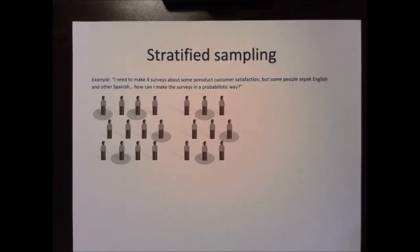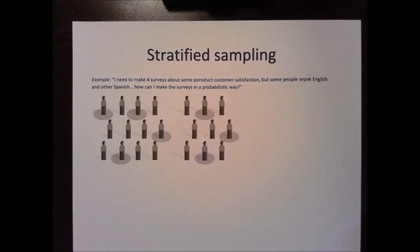The third method is called stratified sampling. Example: I need to conduct a survey about customer satisfaction with some product, but some people speak English and others Spanish. How can I conduct the survey in a probabilistic way? In this case, the stratified sampling has a very specific characteristic — we have groups.